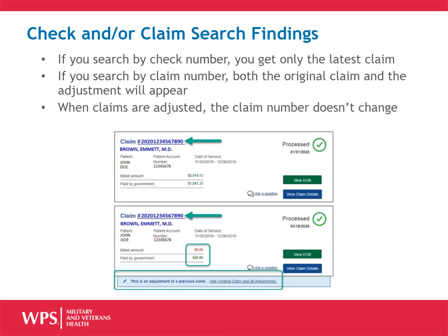If you search by the check number for the adjustment, you will only get the latest claim. If you search by the claim number, both the original claim and the adjustment will appear.